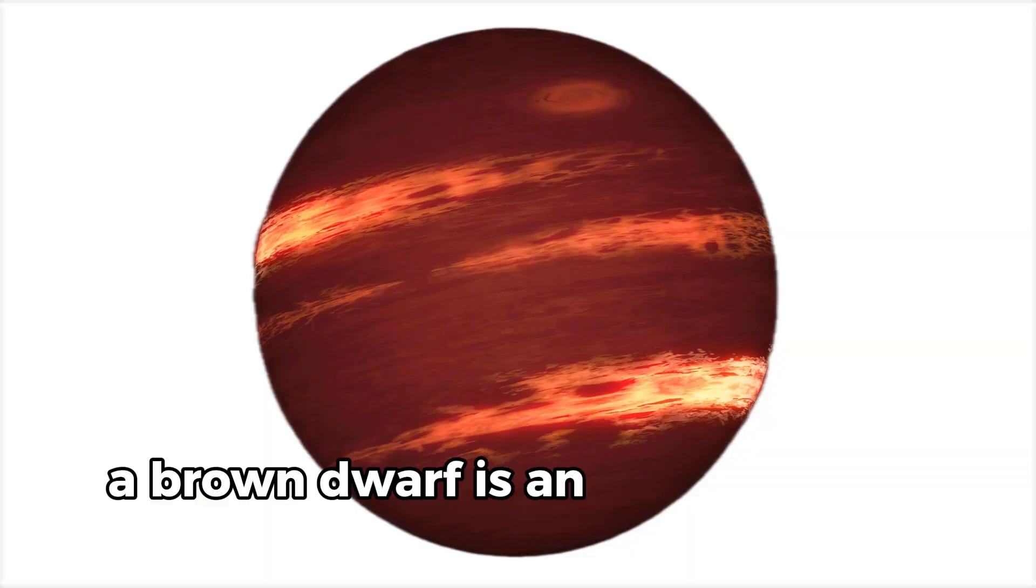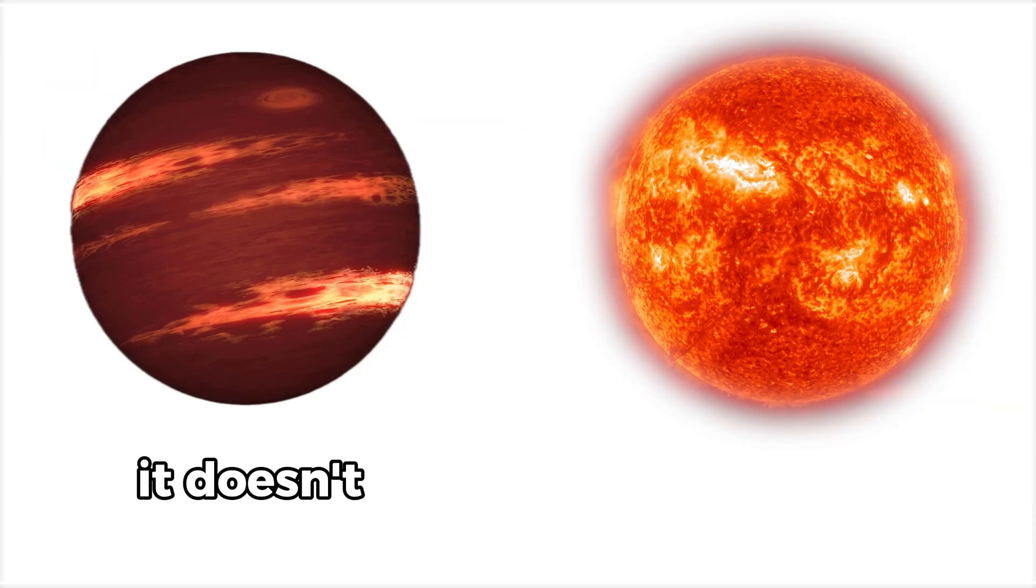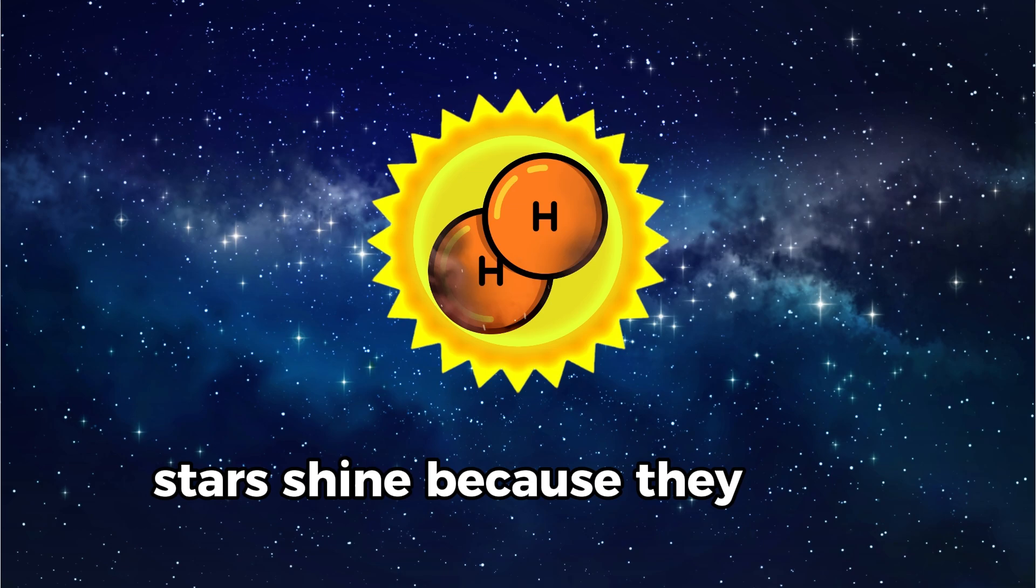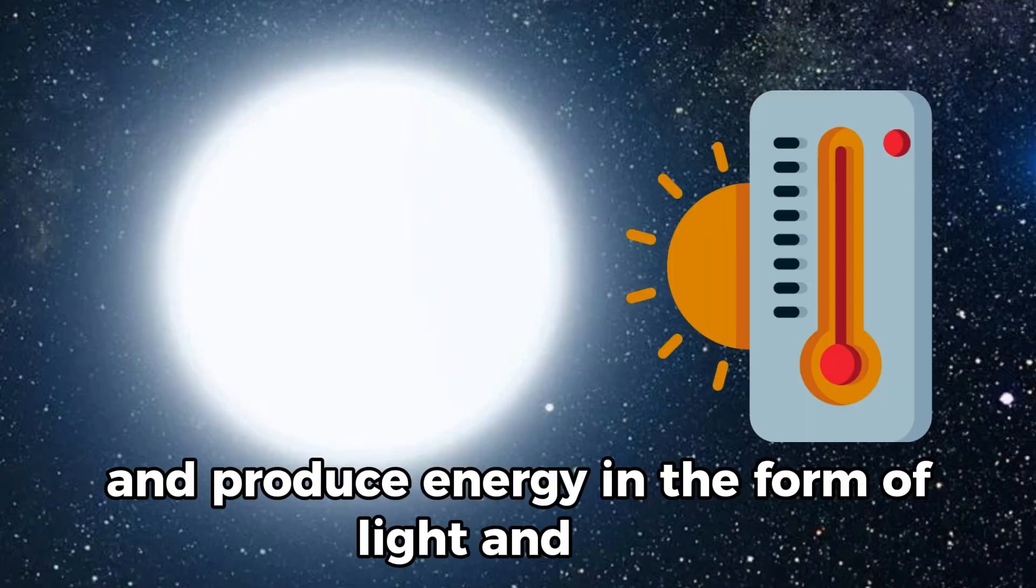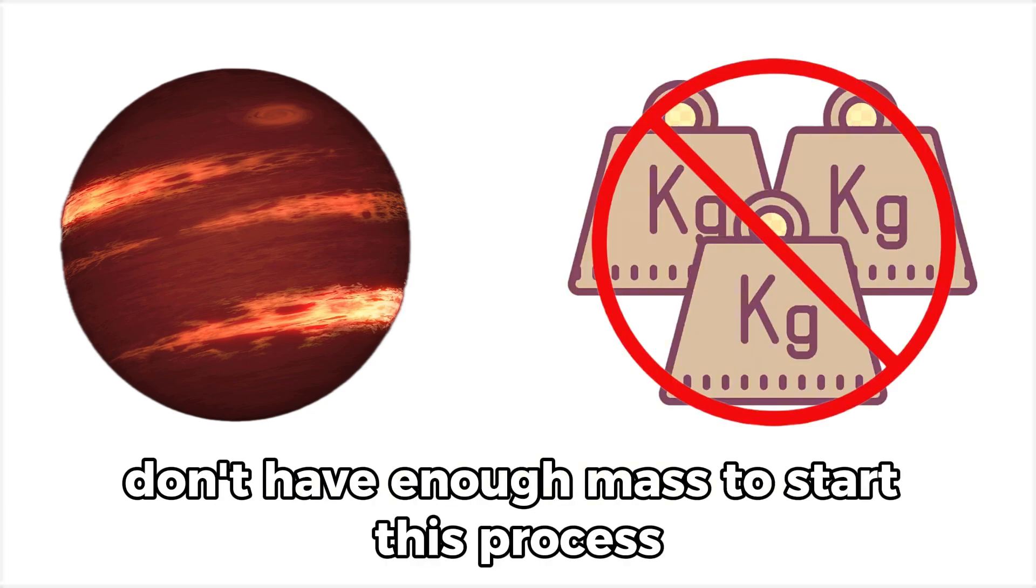A brown dwarf is an object that is larger than a planet but smaller than a star. It doesn't have enough mass to start shining like a star. Stars shine because they burn hydrogen and produce energy in the form of light and heat. However, brown dwarfs don't have enough mass to start this process.